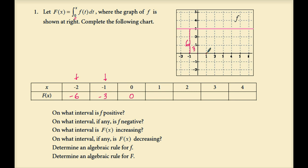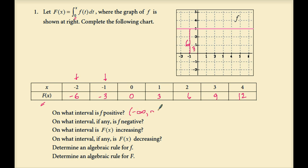From 0 to 1 is a rectangle with area 3. Now moving to the right, the sign of the area will be the sign of the function value. From 0 to 2, a rectangle with area 6. From 0 to 3, a rectangle of area 9. From 0 to 4, a rectangle of area 12. So these are the function values of uppercase F of x. F is completely above the x-axis, so it's positive on its entire domain: negative infinity to infinity.